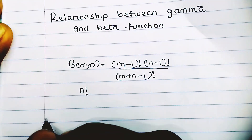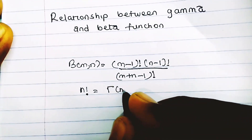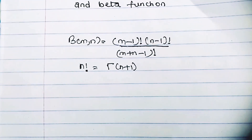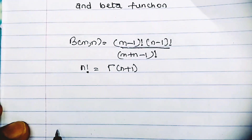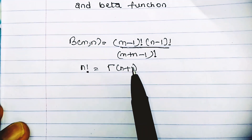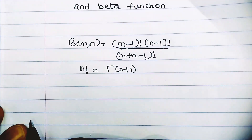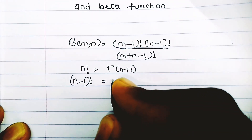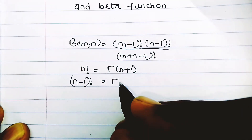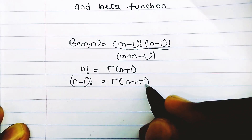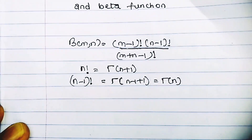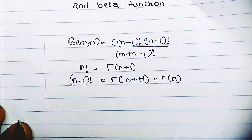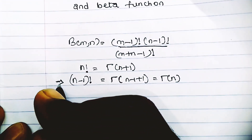We know that n factorial is equal to the gamma of n plus 1. I proved this in my videos on gamma function — gamma of n plus 1 is equal to n factorial. That means n minus 1 factorial will be equal to the gamma of n minus 1 plus 1, which is the gamma of n. So the gamma of n is equal to n minus 1 factorial, which we all know.